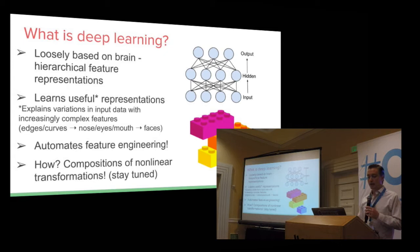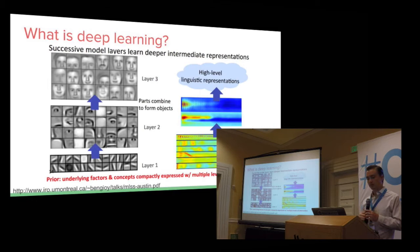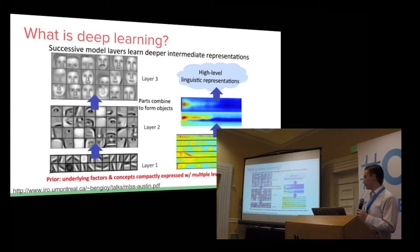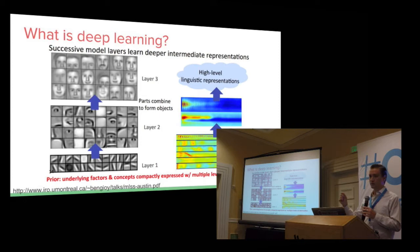You just throw all the data you have at it. It's a composition of nonlinear transformations, and that gives you increasingly powerful representations the more layers you have. Here's an example of that hierarchical representation: this is a simple three-layer model where the first lower levels are edges, and you can see them pieced together to form higher level abstractions. Similarly with audio signals, you can imagine the sound bits coming in as lower level, and it can learn higher level representations of utterances and full words over time.